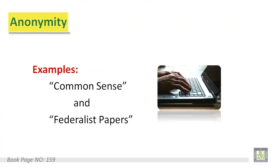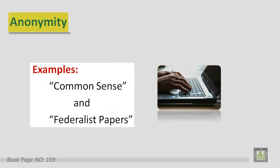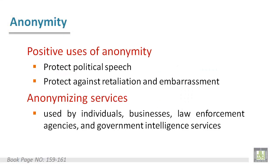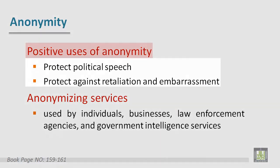Anonymity means the state of being unknown. For example, Common Sense is a book published without the author's name — that is an example of anonymity. The same applies to the Federalist Papers. Some positive uses of anonymity include protecting political speech and protecting against retaliation and embarrassment.